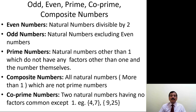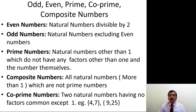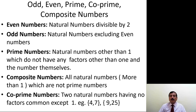Composite numbers are all natural numbers greater than one which are not prime, because they can be expressed as factors of two or more numbers. Co-prime numbers are two natural numbers having no common factors except 1. For example, 4 and 7 are co-prime: 4 equals 2 times 2, and 7 shares no factor with 4.